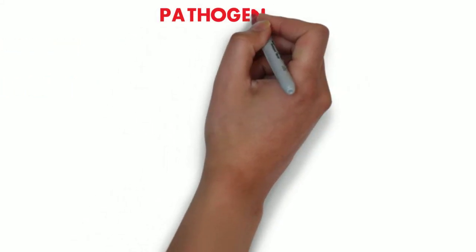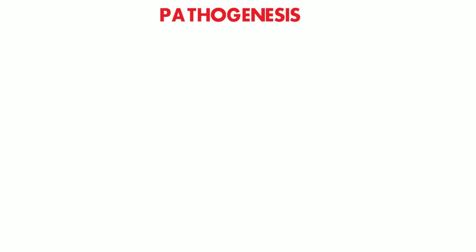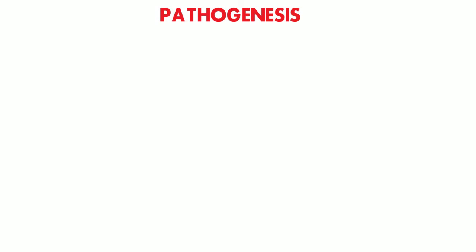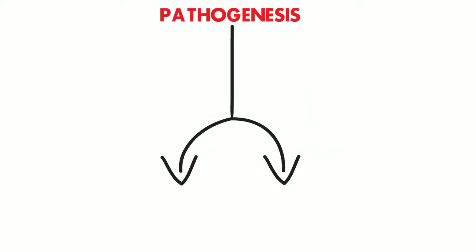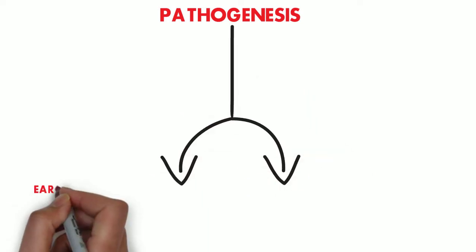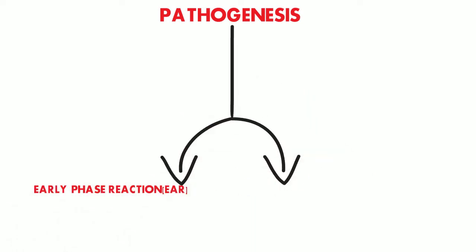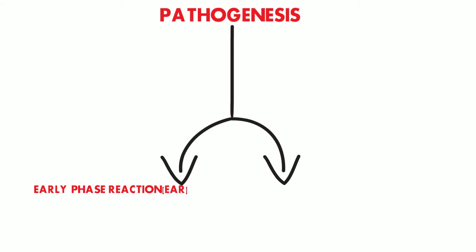Talking about the pathophysiology of bronchial asthma, it is actually due to the increased responsiveness of the tracheobronchial glands to the external allergen, and it consists of two reactions: one is the early phase reaction or the early asthmatic reaction, and the other is the late asthmatic reaction.